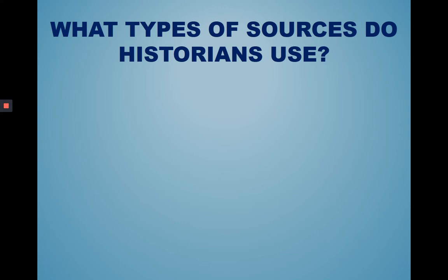We're going to go ahead and get started. What types of sources do historians use? We have talked about the two main types of sources, primary and secondary sources already. Primary sources are sources that are created during a specific time or event and can be artifacts, documents, or clothing.